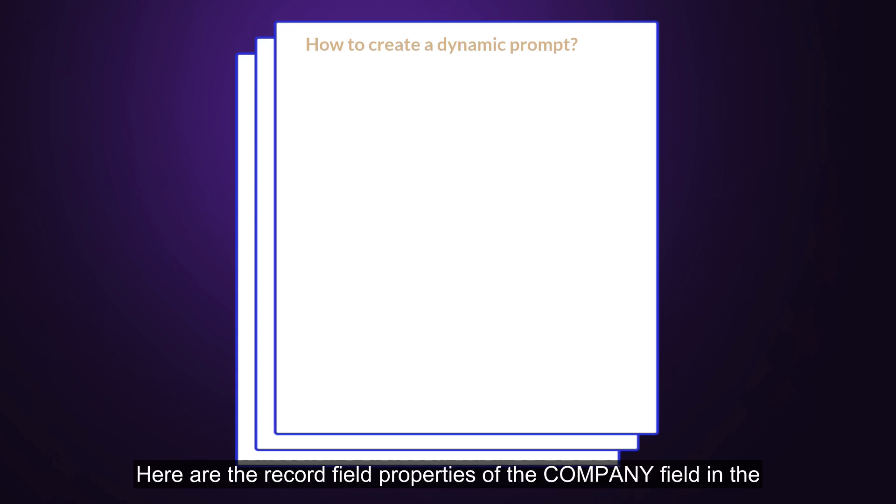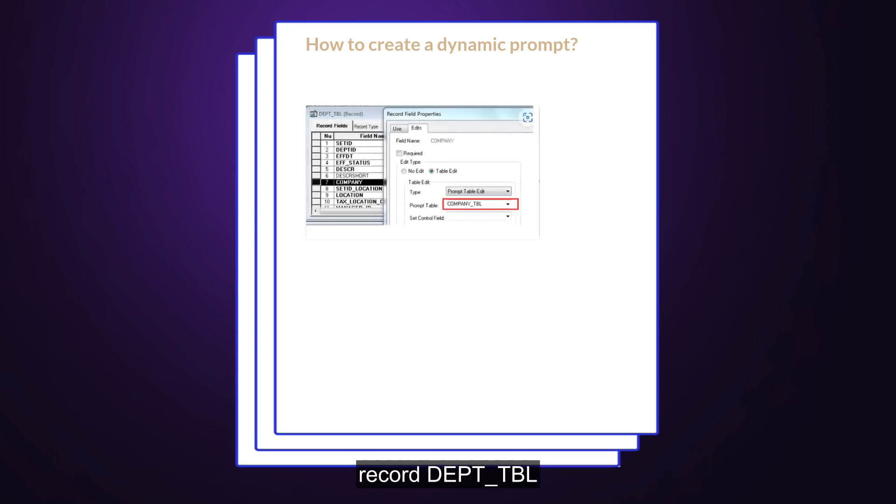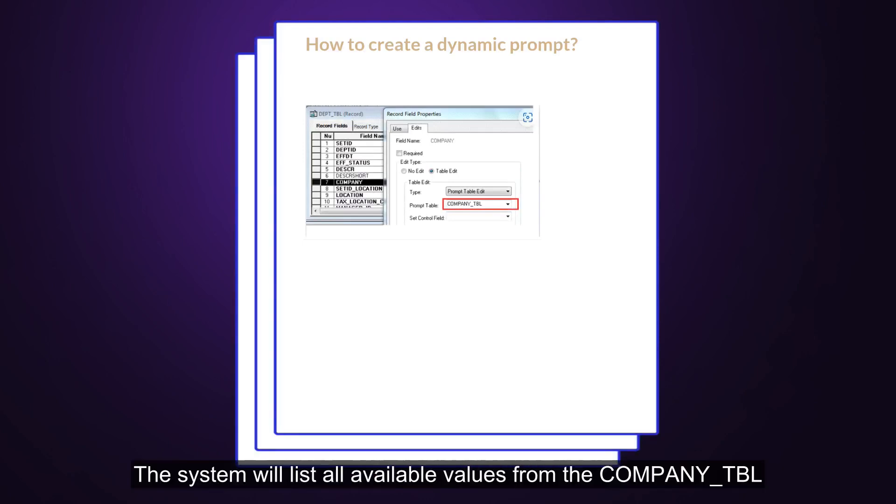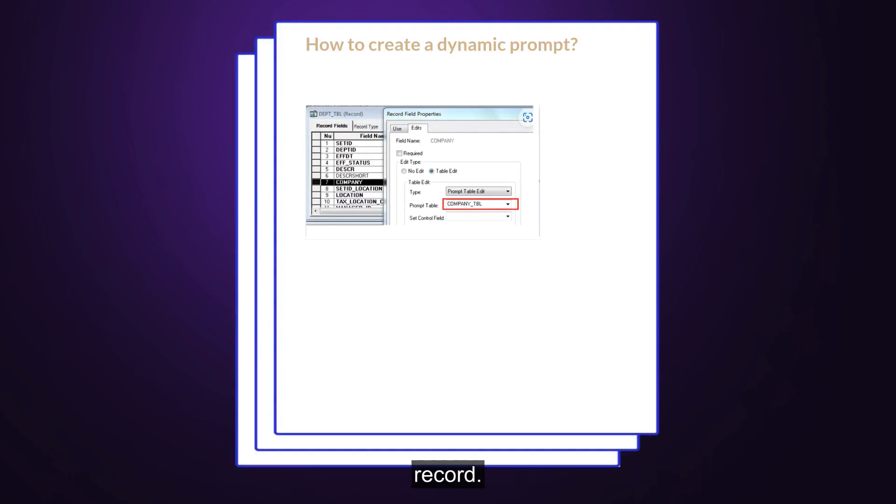Here are the record field properties of the company field in the record DEPT_TBL. In this case, the user has no control over the values that will be prompted. The system will list all available values from the COMPANY_TBL record.